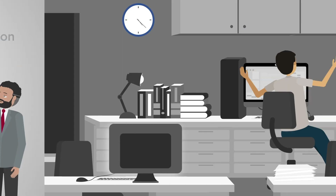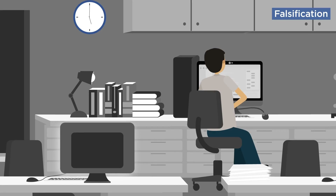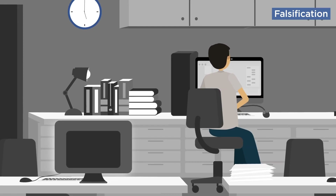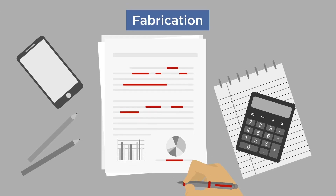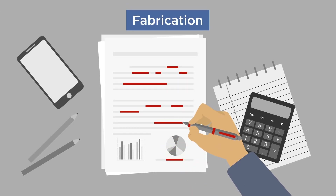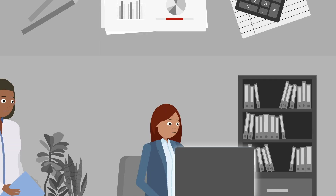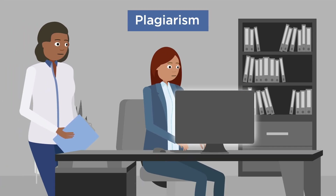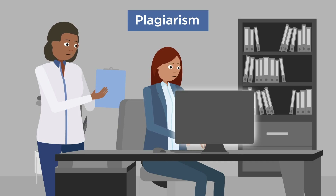Falsification is manipulating research materials, equipment or processes, or changing or omitting data or results such that the research is not accurately represented in the research record. Fabrication is making up data or results and recording or reporting them. Plagiarism is the appropriation of another person's ideas, processes, results or words without giving appropriate credit.